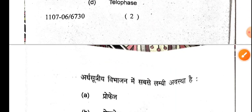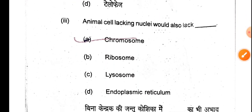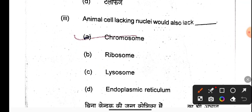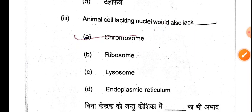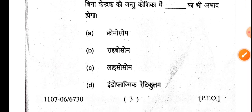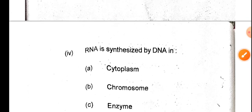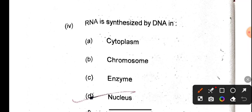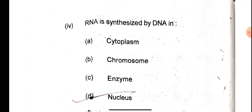Next question: animal cells lack a cell wall. And RNA is synthesized by DNA; it is synthesized in the nucleus.